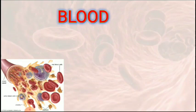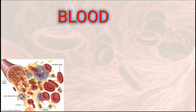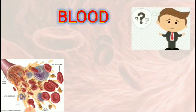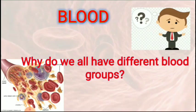Blood is called the fluid of life because it helps in the transport of vitamins, nutrients, minerals, hormones, and gases from one part of our body to another. It consists of various components like RBC, WBC, platelets, etc. We all have the same blood in our body, but we often hear people saying that I have blood group A positive or I have blood group B positive. The question is, why do we all have different blood groups?